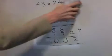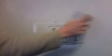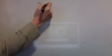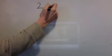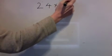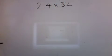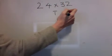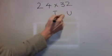Let's try another one. 24 times 32. It's a tens and units column sum.